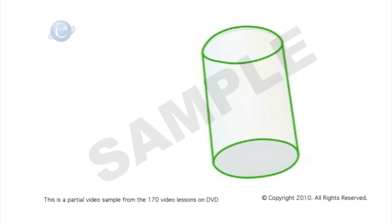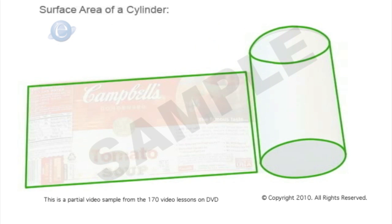The surface area, now think about the can, has area on the top and bottom which are the same, and then it has this area of the body.